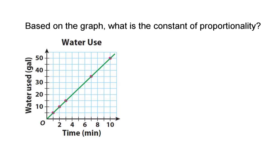In this first question, it says: based on the graph, what is the constant of proportionality? Remember, when we have a proportional graph, the constant of proportionality is that number that we can multiply our x variable by to get to our y variable. In this case, this graph is talking about water used based on time, where time is our x variable and the amount of water used is our y variable.